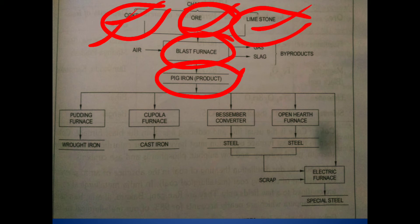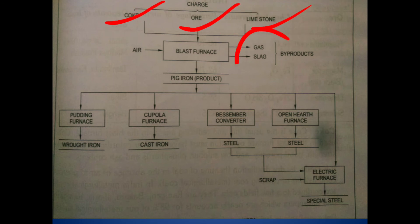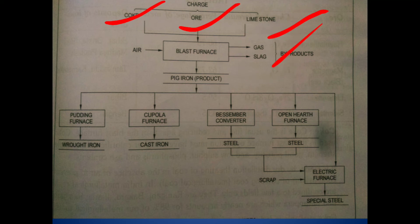By using the blast furnace method, we get pig iron — that is the main product of the blast furnace. The byproducts are gas and slag. Gas is produced from the chemical reactions, and slag refers to the impurities separated out.